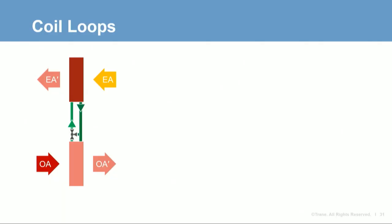Ronnie will discuss this further later in the program. Next, Eric and Ronnie are going to discuss common energy recovery technologies and their performance. The first technology is coil loops. In all these examples, we're going to review outdoor air preconditioning configurations. Coil loops, sometimes called coil runaround loops, have two or more fin tube coils that are piped together in a closed loop.